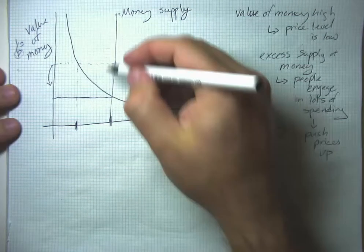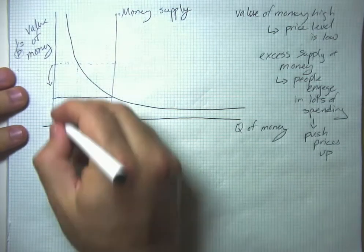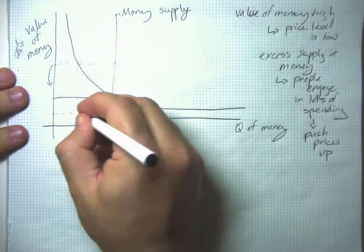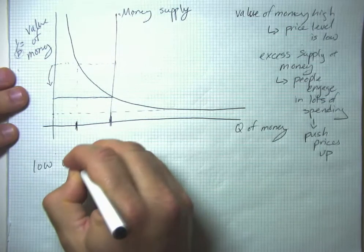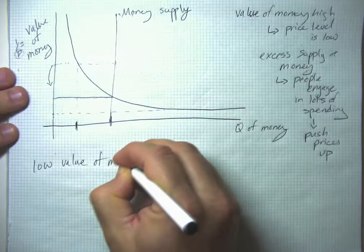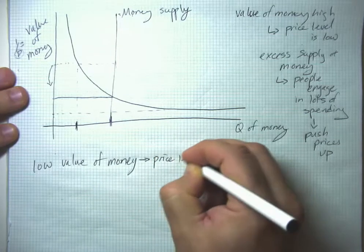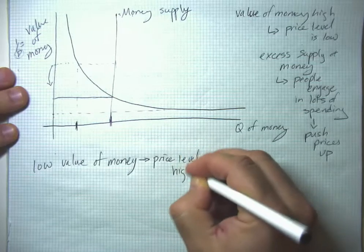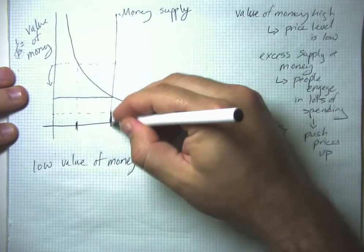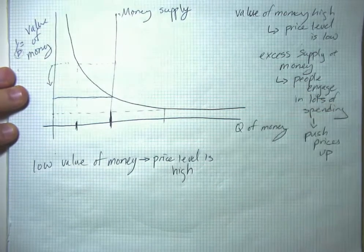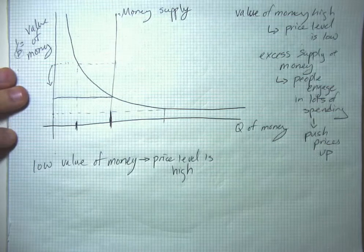So we start high, we get pushed down to equilibrium, just like in a conventional demand and supply model. What if we start down here where the value of money is low? So that's going to mean that's equivalent to saying the price level is high. So in this situation, people want to hold this much money, but there's only this much money available. So it's like people want to hold $2,000 in their checking account, but there's only $1,000 per person available.